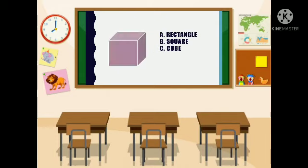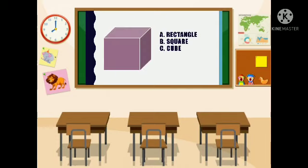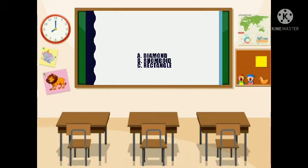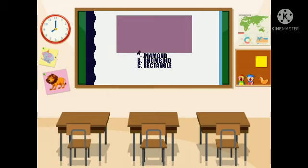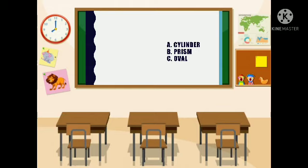How about this shape? A rectangle, B square, or C cube? Correct! It is cube, letter C. How about this shape? A diamond, B rhomboid, or C rectangle? Correct! Answer is rectangle, letter C.